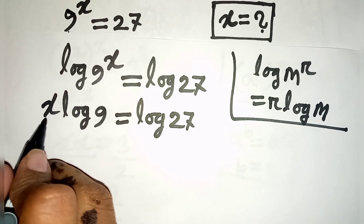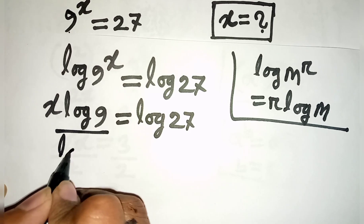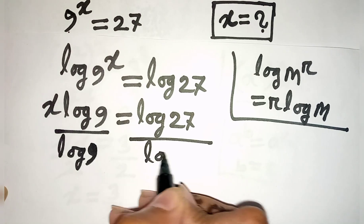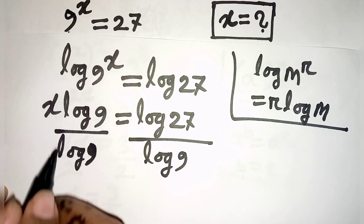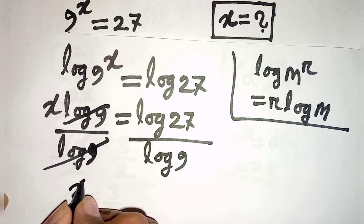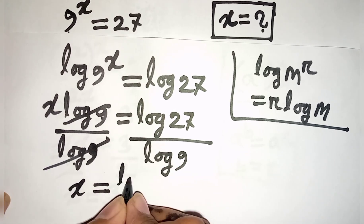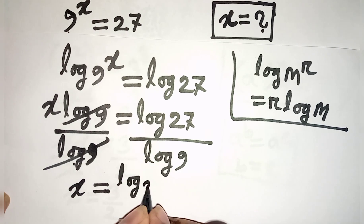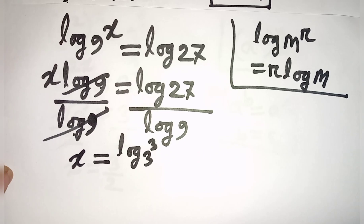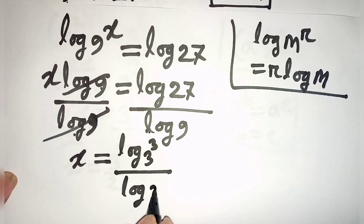Now we need the value of x, so we divide both sides by log 9. This log 9 and log 9 will be cancelled. So x is equal to log 27, which is the same as 3 power 3, divided by log 9, which is the same as 3 power 2.